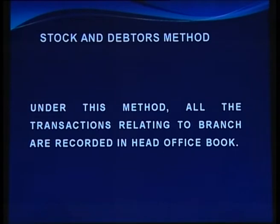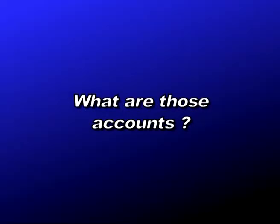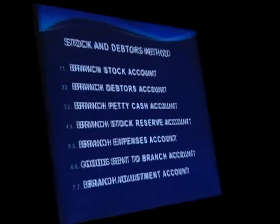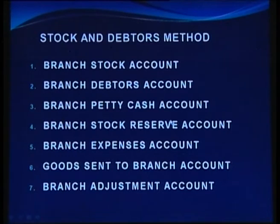Under this method, all transactions relating to branches are recorded in the head office books. We need to maintain a certain set of accounts. Goods are sent by the head office to the branch at invoice price, where invoice price means cost plus profit. The following accounts are maintained under this system.